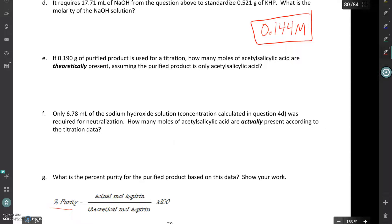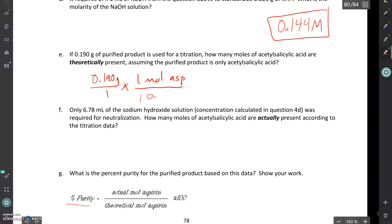So we've got if 0.190 grams of purified product is used for titration how many moles of acetylsalicylic acid, how many moles of aspirin are theoretically present assuming the purified product is only acetylsalicylic acid. So based on the mass can we figure out how many moles of aspirin are present? And of course we can. So we'll take our mass 0.190 grams we'll divide it by the molar mass of aspirin one mole ASP for aspirin is equal to 180.16 grams.